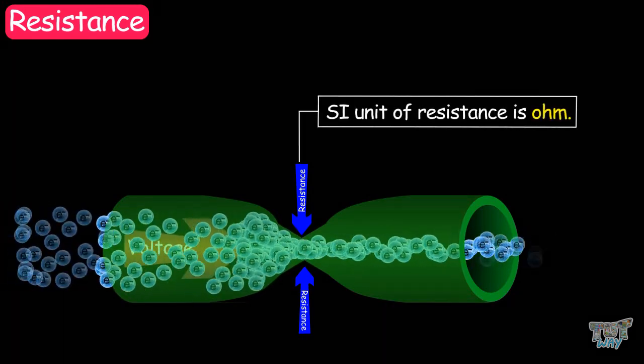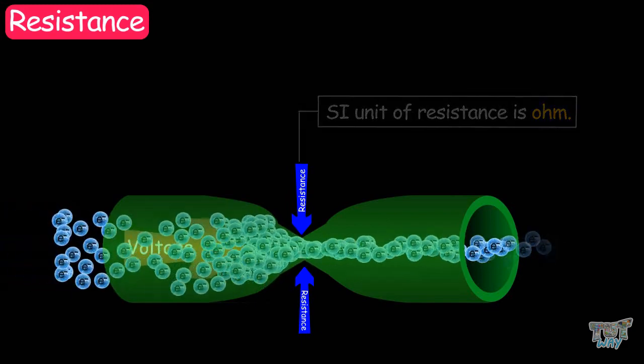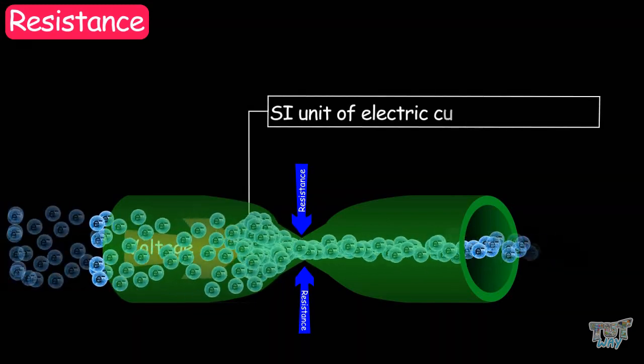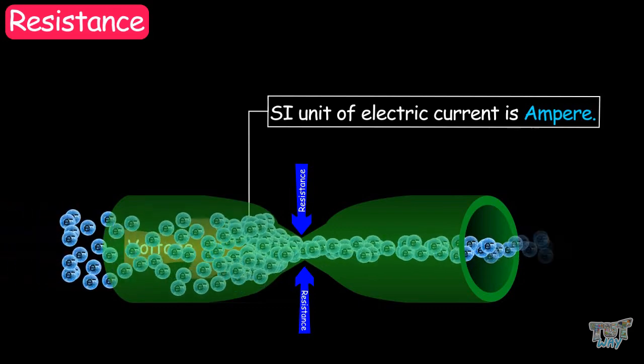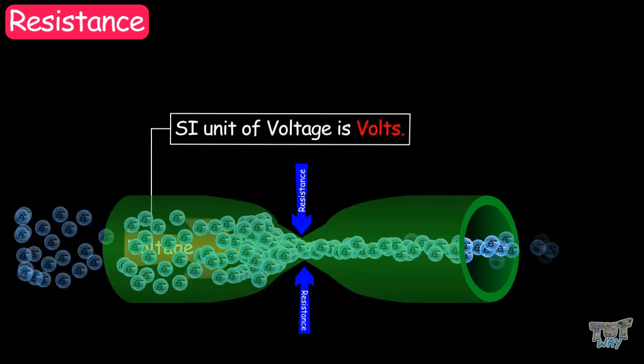The SI unit of resistance is ohm. And the SI unit of electric current is ampere. And the SI unit of voltage is volts.